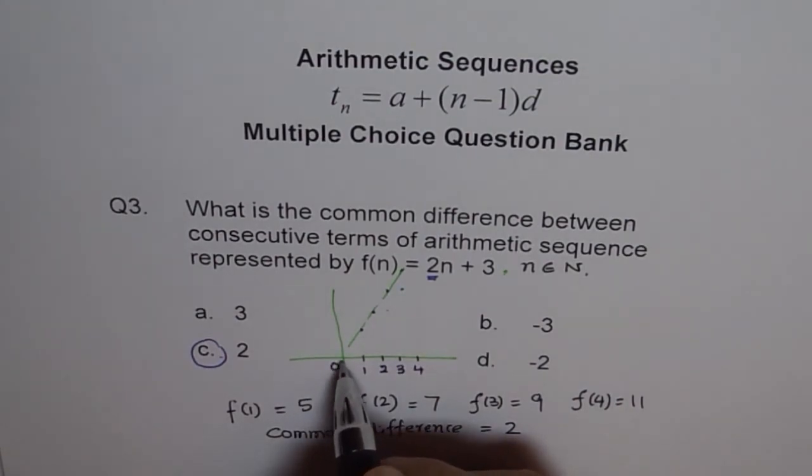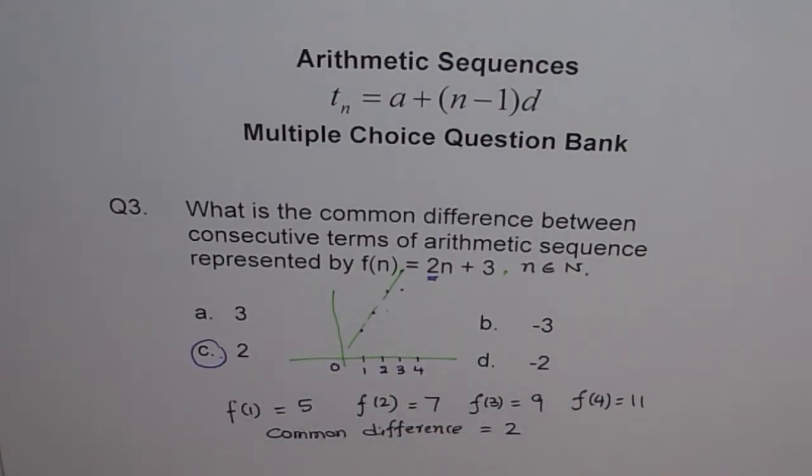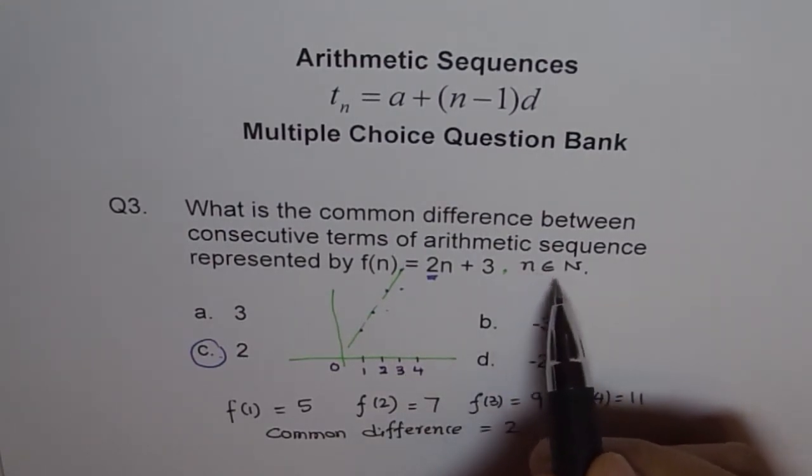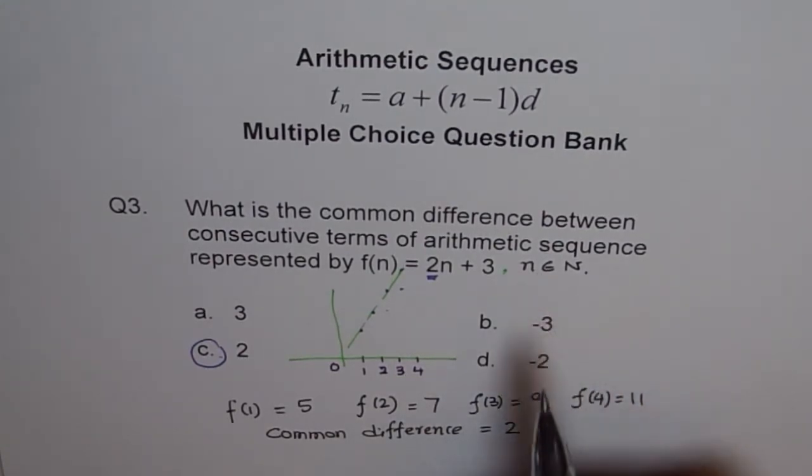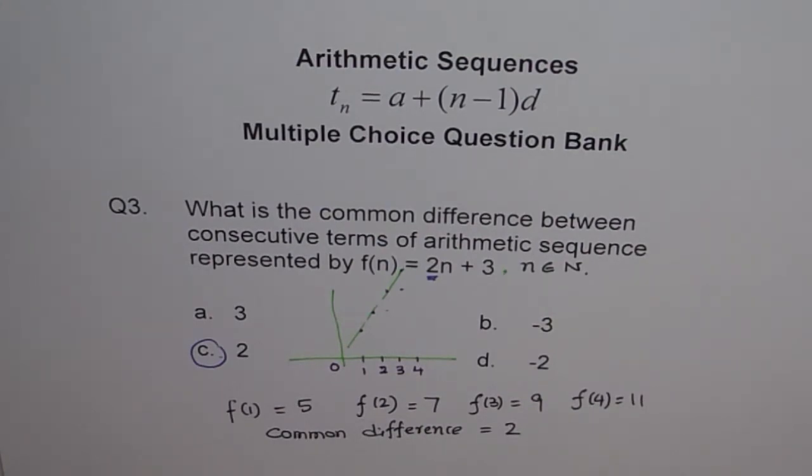That is why we cannot join this line. And remember, n cannot be 0 also. So, n points will start only from 1, not even from 0. If they are starting from 0, then it is no more a sequence. Okay? Now, because n is a set of natural numbers and in natural numbers, the numbers are 1, 2, 3, 4. Okay? Thank you.